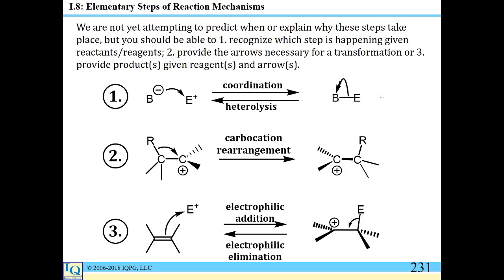Coordination, the forward reaction shown for Step 1 on page 231 of the Lecture Guide, is simply the formation of a sigma bond, and only one arrow is involved — the donation from a Lewis base to a Lewis acid, for example. The reverse of this process, heterolysis, is simply breaking that sigma bond and separating the two species from one another. Many reactions in Organic 1 such as SN1 and E1 reactions, and reactions of alkenes like hydrohalogenation and hydration, involve a carbocation rearrangement as a possible step.